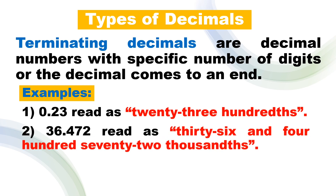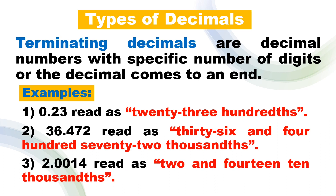Next, we have 36.472. We can read this as 36 and 472 thousandths. After the decimal point on the right side: 4 has a place value of tenths, 7 is hundredths, and 2 is thousandths. Next, we have 2.0014. We can read this as 2 and 14 ten-thousandths, because the place value of 4 is ten-thousandths.